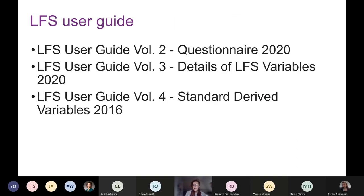When looking at information about variables, there are three main documents to consult. Volume two is the questionnaire, which shows you the full questions and the routing for those questions. Volume three is the details guide, which shows details of all the variables including the derived variables. Volume four is the standard derived variables document, detailing how all the variables have been derived.